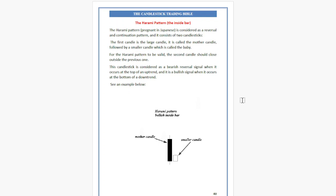The Harami pattern, or the inside bar — meaning 'pregnant' in Japanese — is considered both a reversal and a continuing pattern, as it consists of two candlesticks. It can be a reversal pattern and also a continuation pattern.